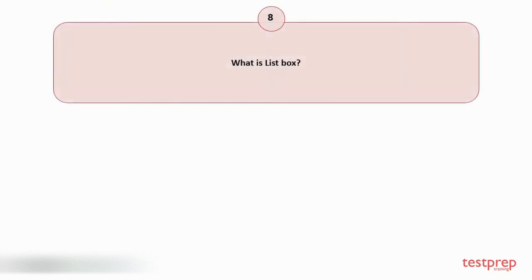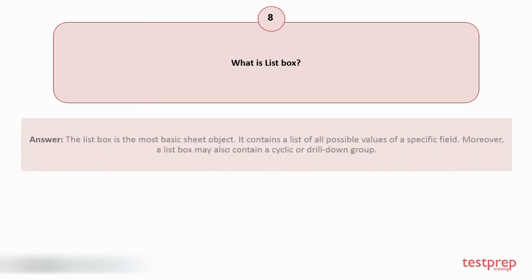Question number 8: What is ListBox? The ListBox is the most basic sheet object. It contains a list of all possible values of a specific field. Moreover, a ListBox may also contain a cyclic or drill-down group.